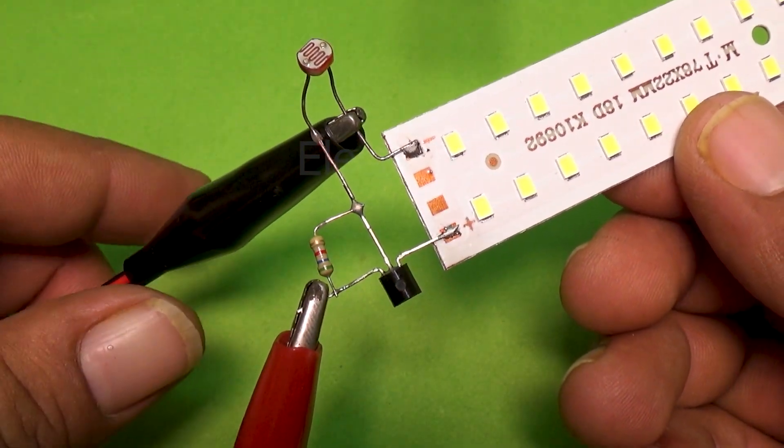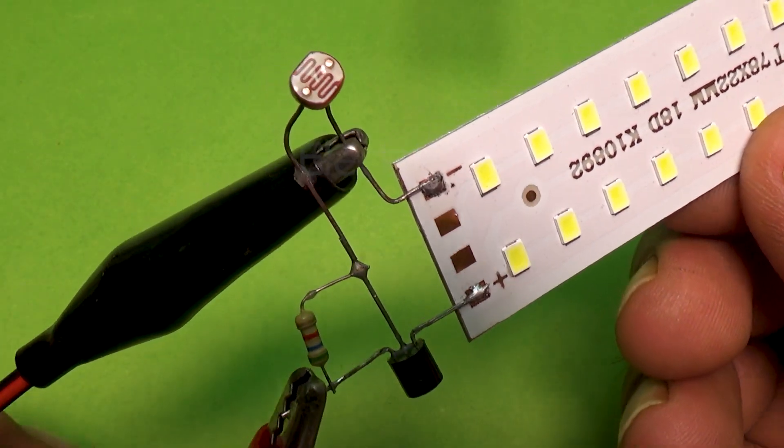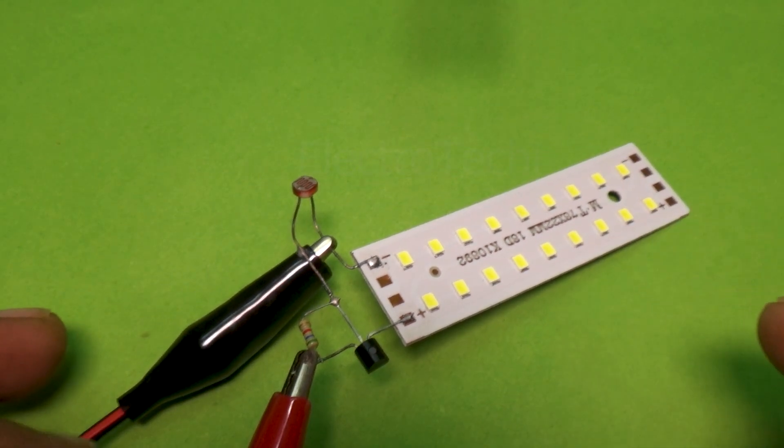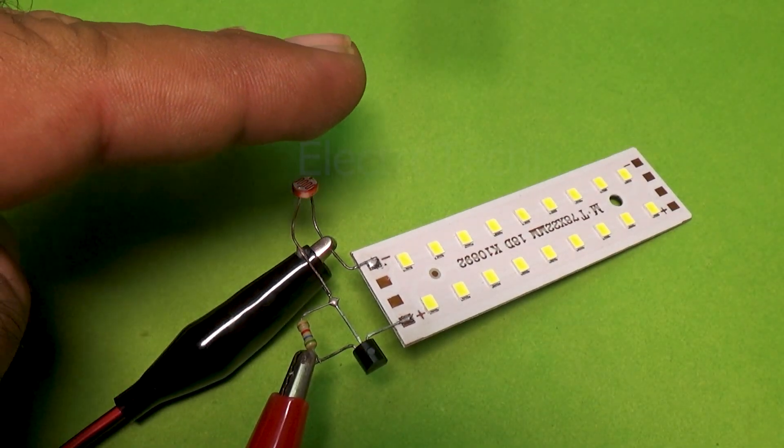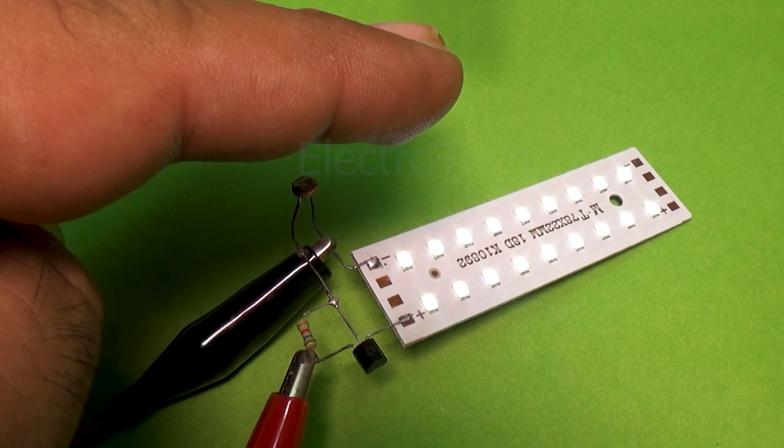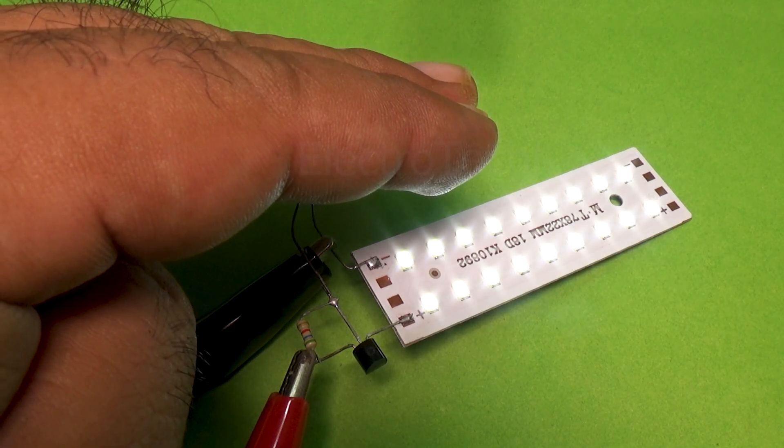Circuit logic explanation. Here's the simple logic behind it. When there's light, the resistance of the LDR becomes very low. This pulls the base voltage of the transistor close to ground. As a result, the transistor remains off and no current flows through the LED, so the LED stays off.